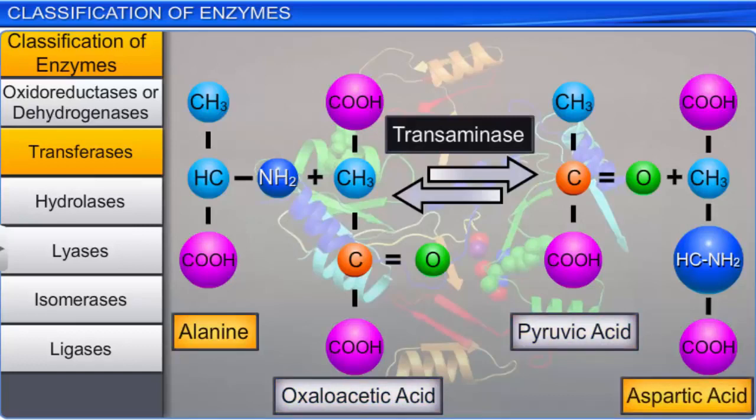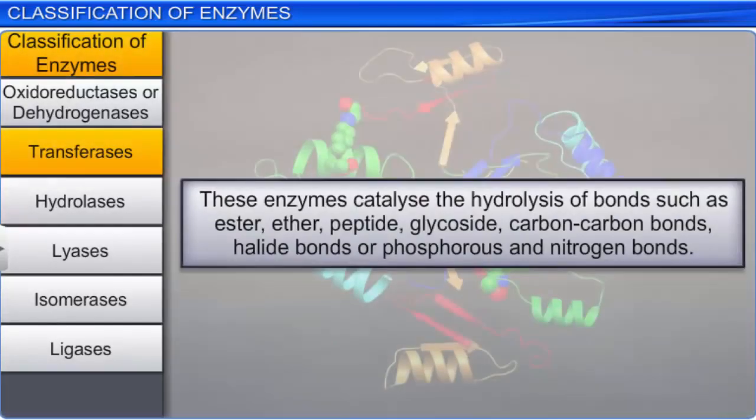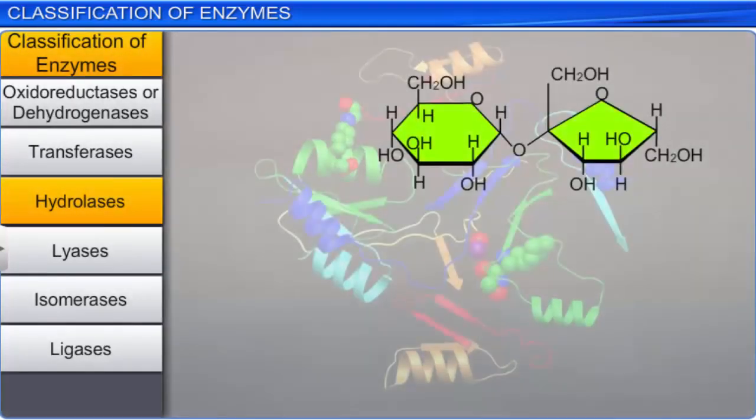The third class of enzymes or hydrolases catalyzes the hydrolysis of bonds such as ester, ether, peptide, glycoside, carbon-carbon bonds, halide bonds, or phosphorus and nitrogen bonds. For example, the hydrolysis of glycosidic bonds in sucrose by sucrase leads to the formation of glucose and fructose.